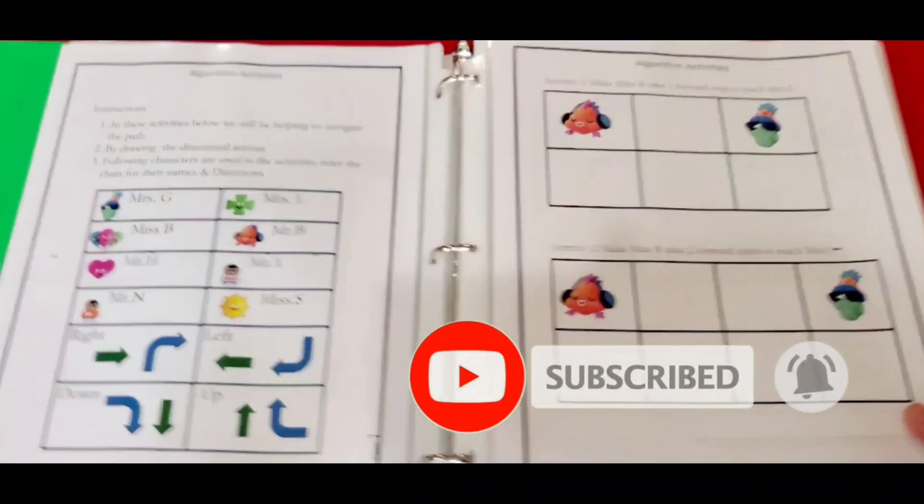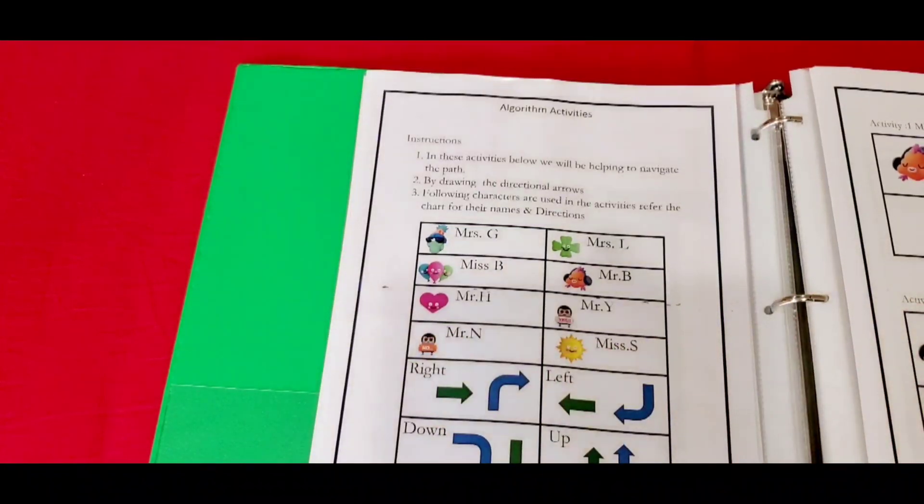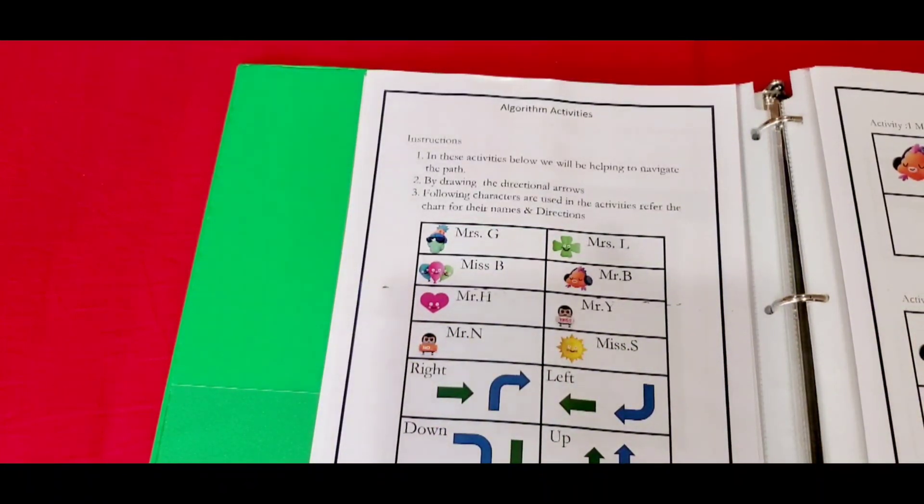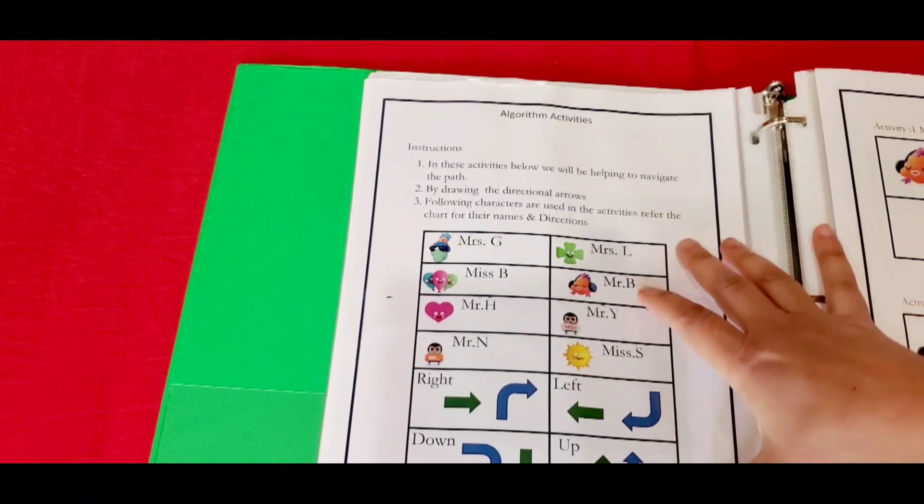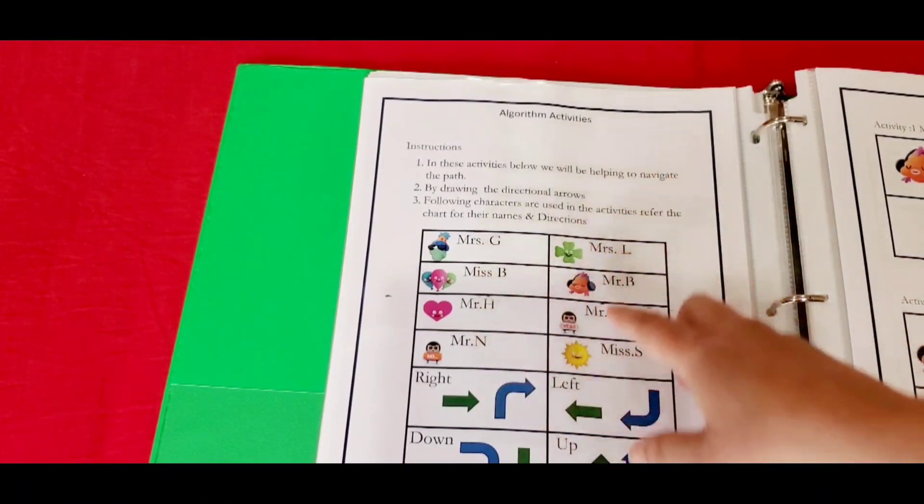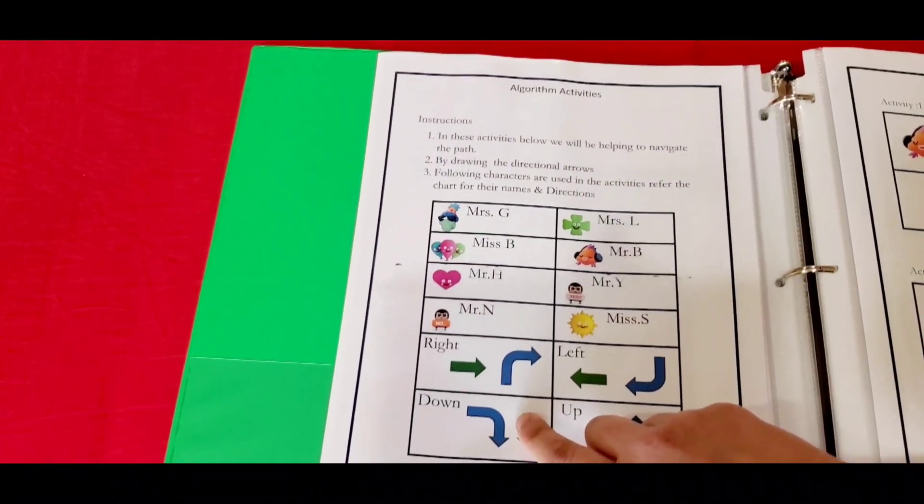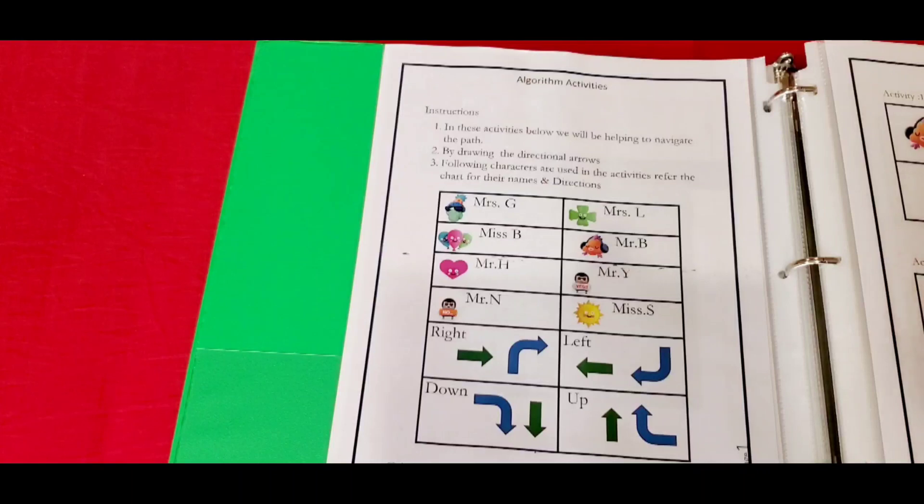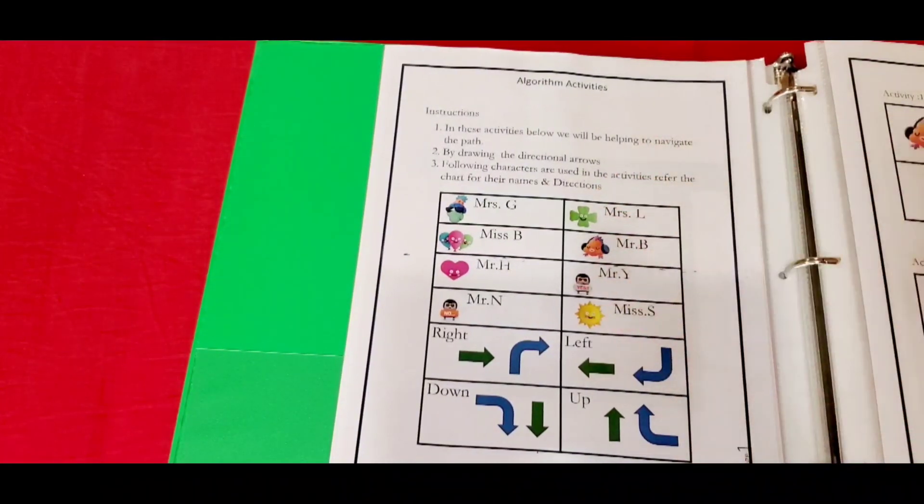The first part is there's an instruction manual right here which comes with the printable. The coding printable is a set of one to five. Here you have these images which represent a name and you have these arrows which are used in the activity. This is primarily a reference manual as soon as you start doing the activity.